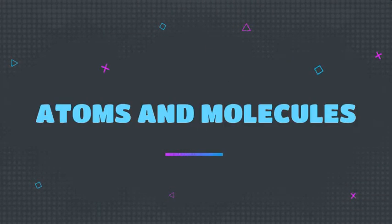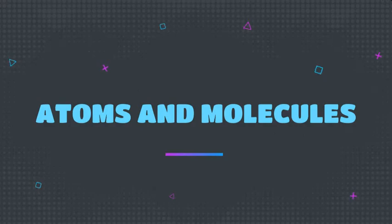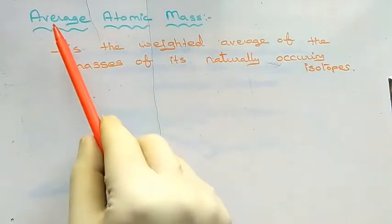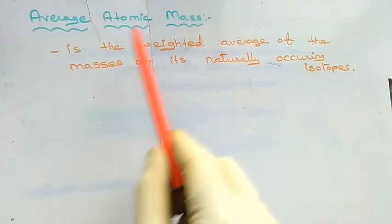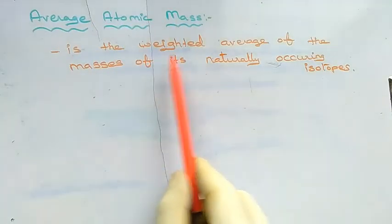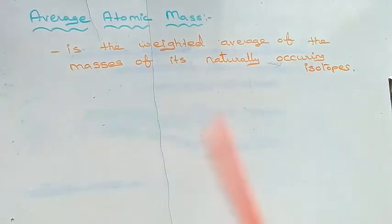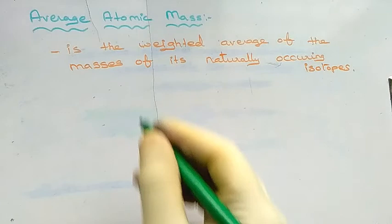Welcome. In this video we are going to see about atoms and molecules. First let's see how to calculate average atomic mass. Average atomic mass of an element is the weighted average of the masses of its naturally occurring isotopes.